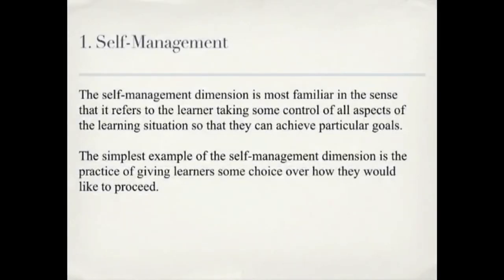The first dimension of Garrison's model focuses on the process of self-directed learning and is thus linked to the implications of self-directed learning for teaching. The other two dimensions focus on the cognitive aspects of self-directed learning. A critical underpinning of the cognitive dimensions is that it is 'difficult to get learners to accept responsibility for meaningful learning outcomes when they have little control of and input into the learning process.'